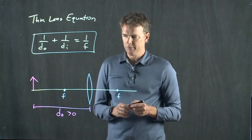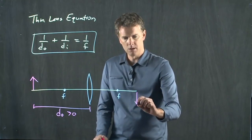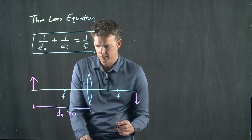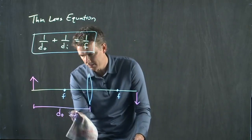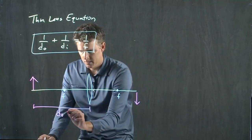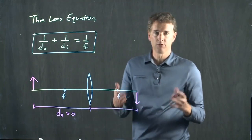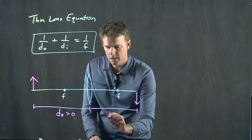We know that it's going to form an image over here somewhere. We can use our ray tracing techniques to figure out where that is. That distance from the lens to the image is DI.